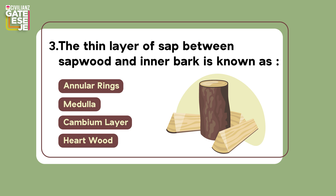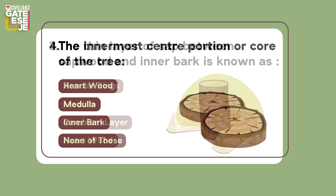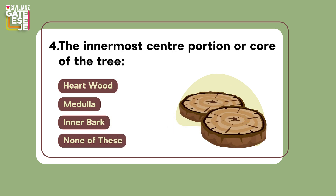Question 3: The thin layer of sap between sapwood and inner bark is known as — (A) annular rings, (B) medulla, (C) cambium layer, (D) hardwood.